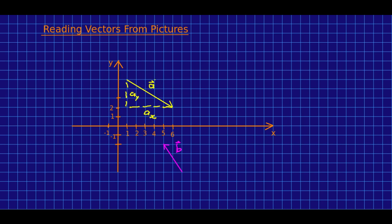Now notice I've put a vector symbol on a because it is a vector. I haven't put vector symbols on the components. They aren't vectors, they're scalars.